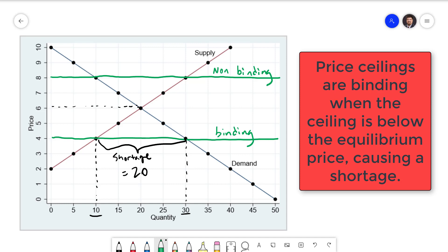Since this price ceiling has an effect on the market, we say it is a binding price ceiling. When the price ceiling is above the equilibrium price, it's non-binding. And when the price is below the equilibrium price, it is binding.